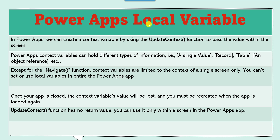Except for the navigate function, context variables are limited to the context of a single screen only. You cannot set or use local variables across the entire PowerApps app. Once your app is closed, the context variable's value will be lost and must be re-set when the app is loaded again. The updateContext function has no return value and can only be used within a screen.